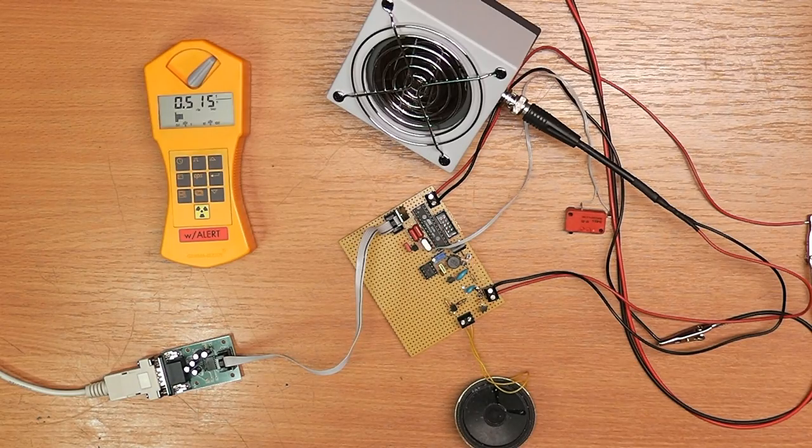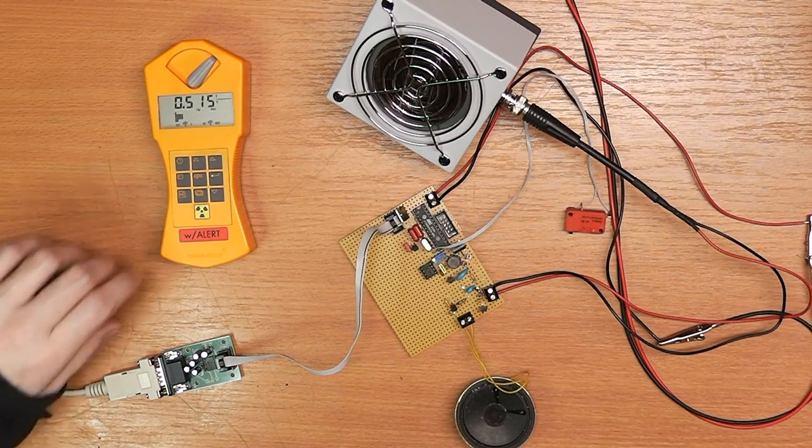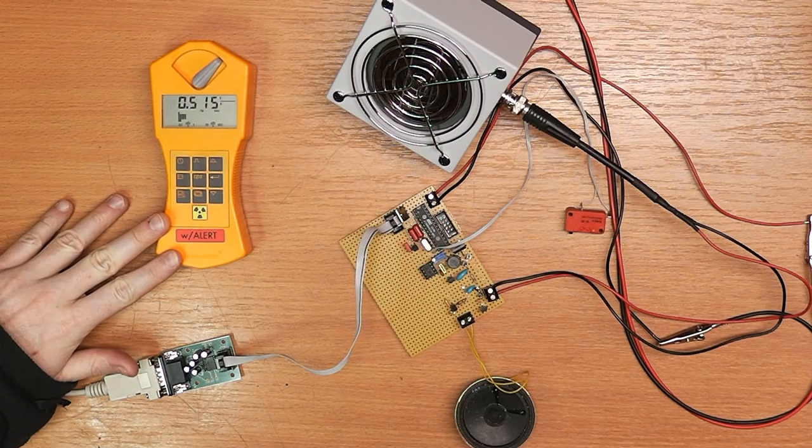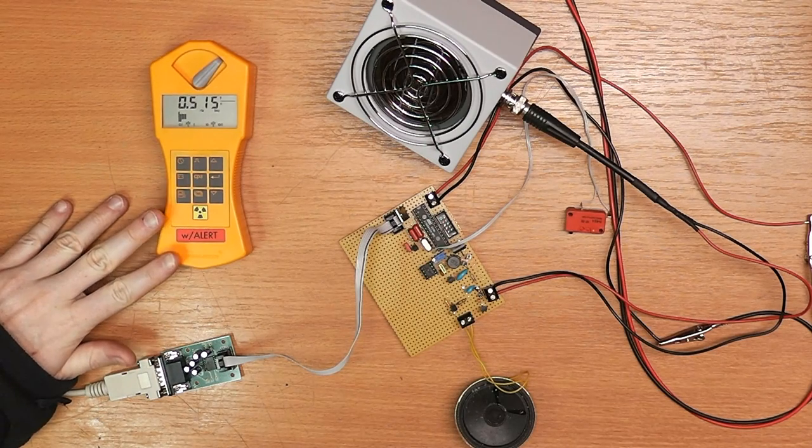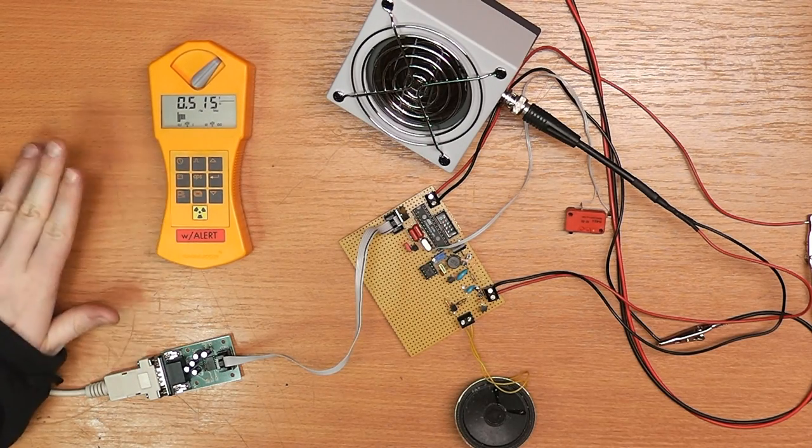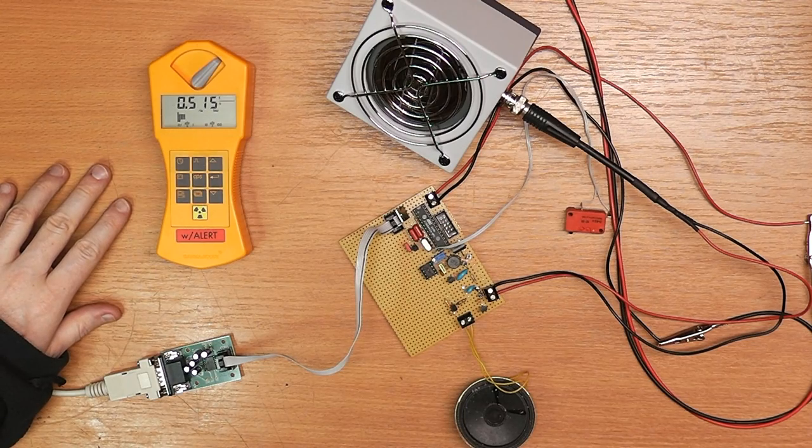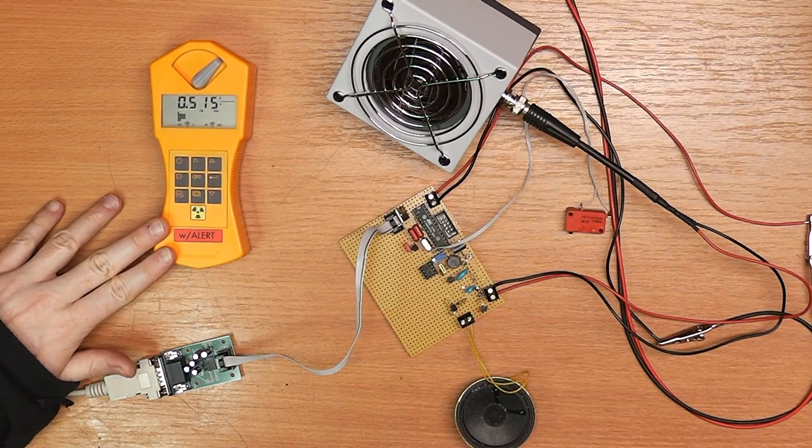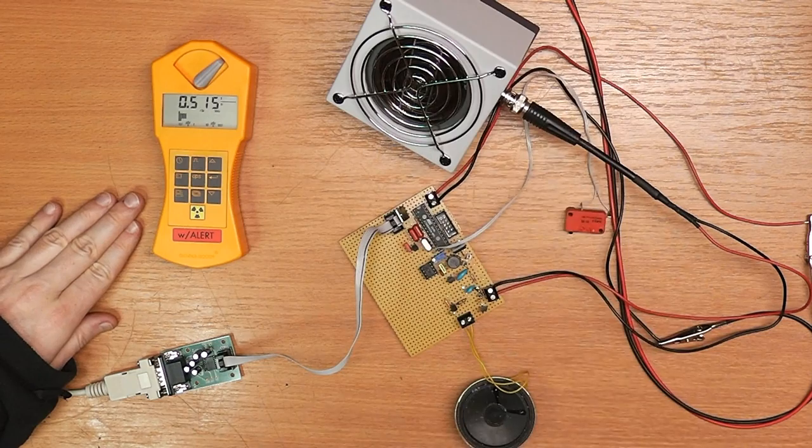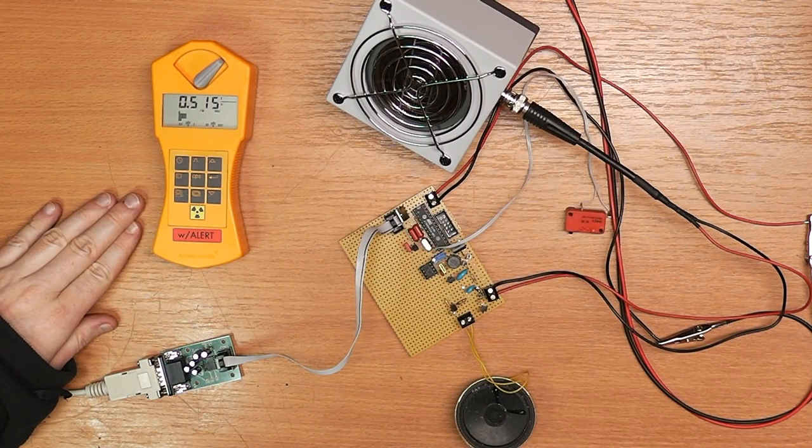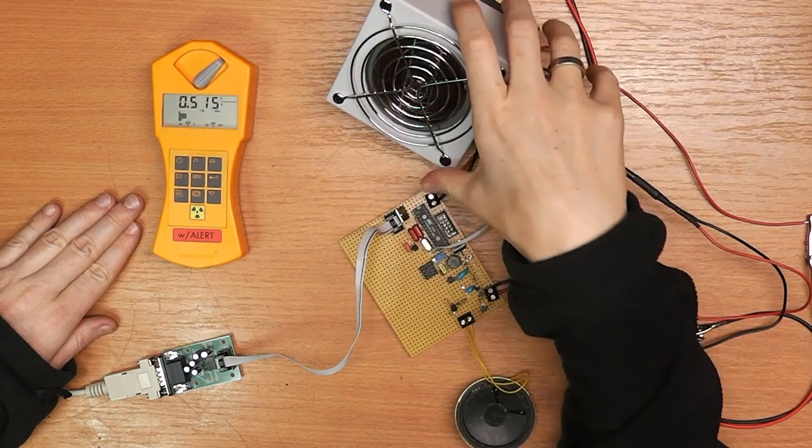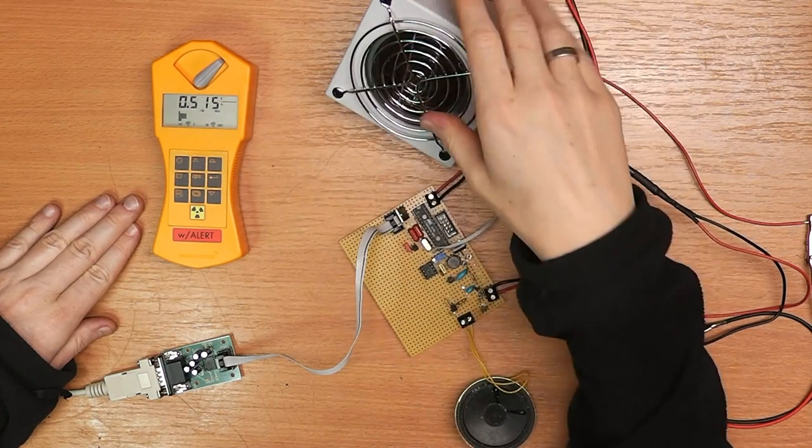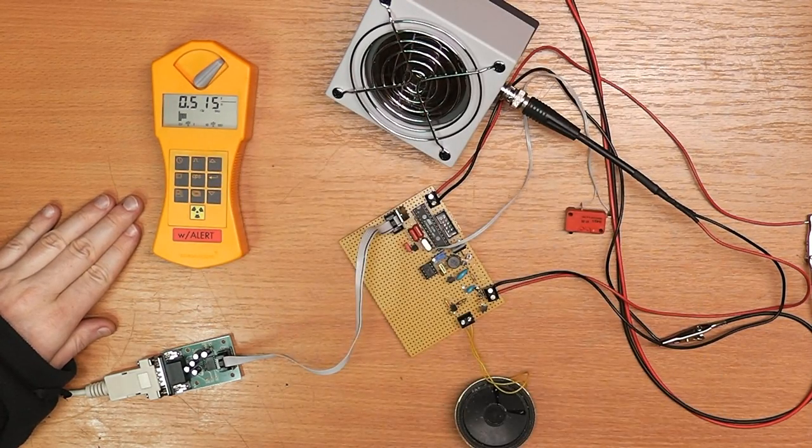So here's the zero rate or the background radiation rate. We have about 0.515 counts per second. So this is about 31 counts per minute. On the Gamma Scout, on the pancake probe, we have about 125 counts per minute. So this is roughly four times the count rate that the Gamma Scout has.